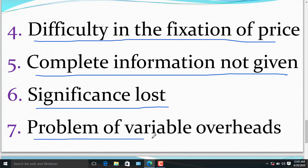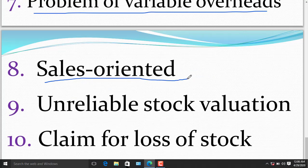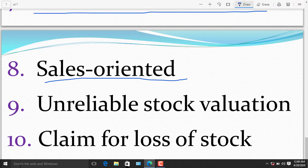The seventh limitation of marginal costing is problems of variable overheads. Marginal costing overcomes the problems of over and under absorption of fixed overheads, yet there is the problem in case of variable overheads. Eighth point of limitation in marginal costing is sales oriented. Successful business has to go in a balanced way in respect of selling production functions, but marginal costing is criticized on account of its attaching over importance to selling functions. It is said to be sales oriented and production function is given less importance. It is sales oriented with less concentration on production.